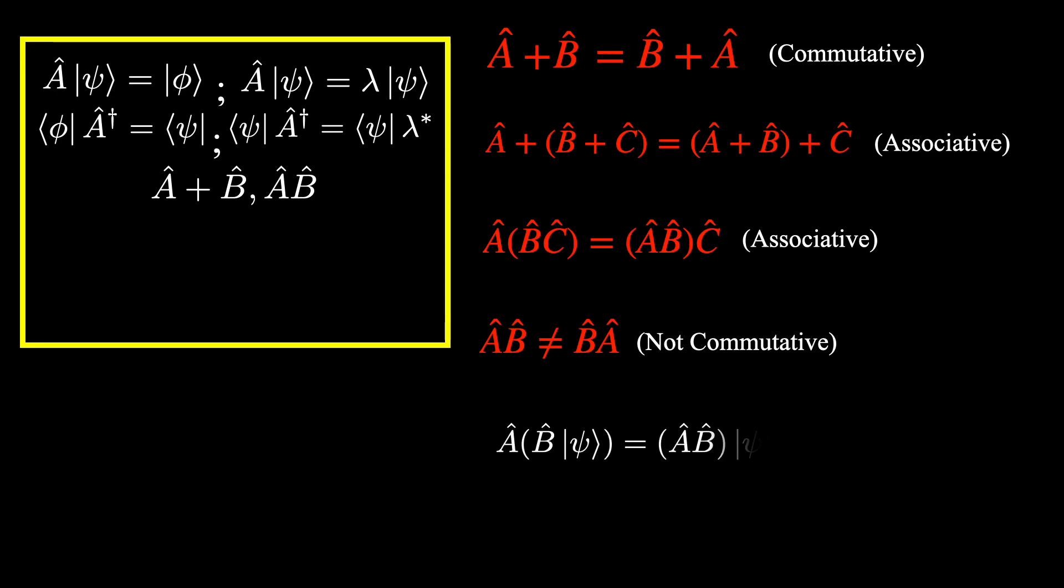The associativity of operators means that if you apply an operator B to a ket first and then apply the operator A, this is the same as forming a new operator AB, and then applying it to the ket. So all three of these expressions are equivalent and turn out to be useful in various circumstances. The same thing can also be done with operators acting on bras.